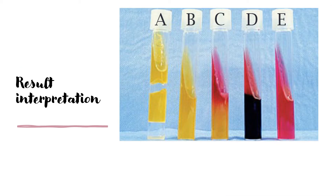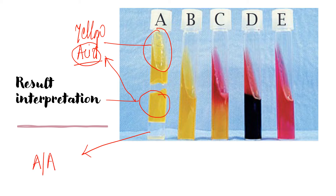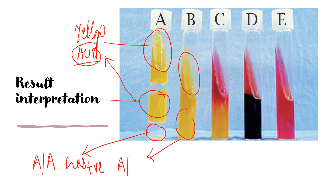Here are five test tubes labeled A, B, C, D, and E to interpret. In tube A, the slant is yellow (acidic) and the butt is also yellow (acidic), giving result Acid/Acid (A/A). There is also media cracking indicating gas production, so we record gas positive. In tube B, both slant and butt show acid production (A/A), but gas is negative.